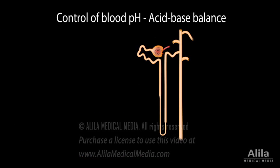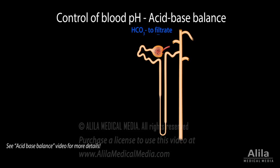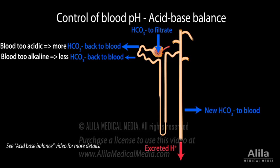The kidneys control blood pH by adjusting the amount of excreted acids and reabsorbed bicarbonate. Plasma bicarbonate is filtered in the glomerulus during the first step of urine formation, then reabsorbed back into the blood in the proximal tubule. The amount of reabsorbed bicarbonate is regulated in response to changes in blood pH — it increases during acid loads and decreases during alkali loads. In addition, the collecting duct also generates new bicarbonate, which exits into the blood during high acid loads.